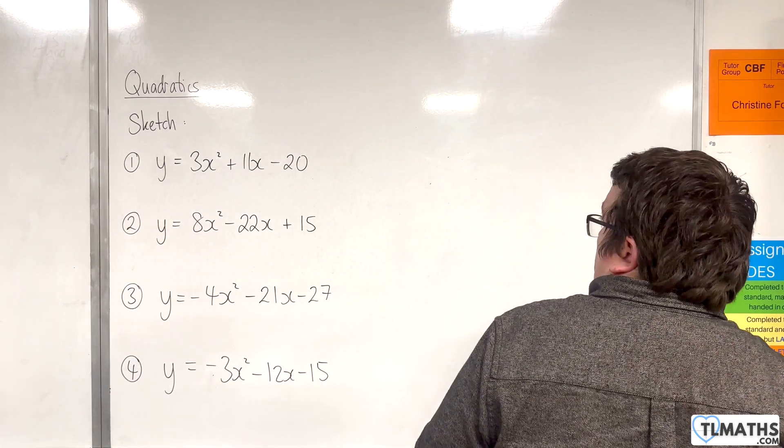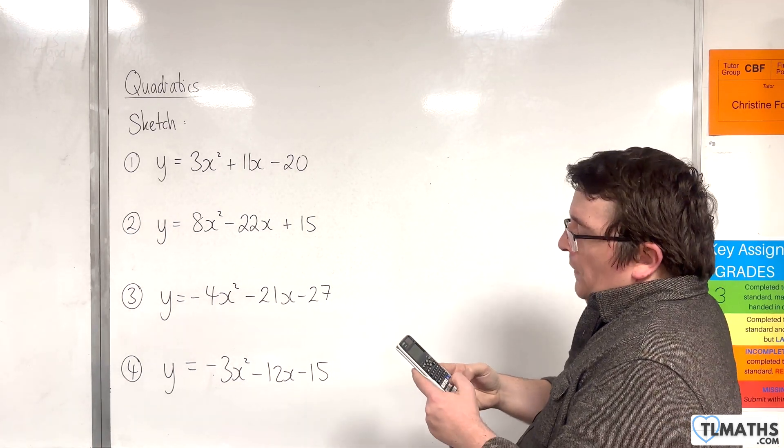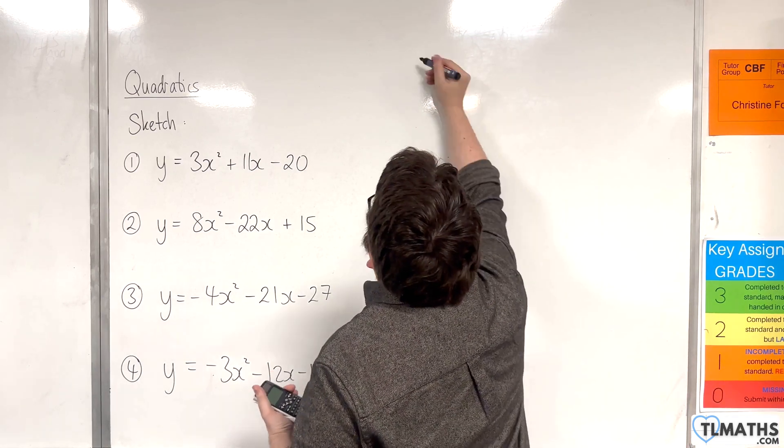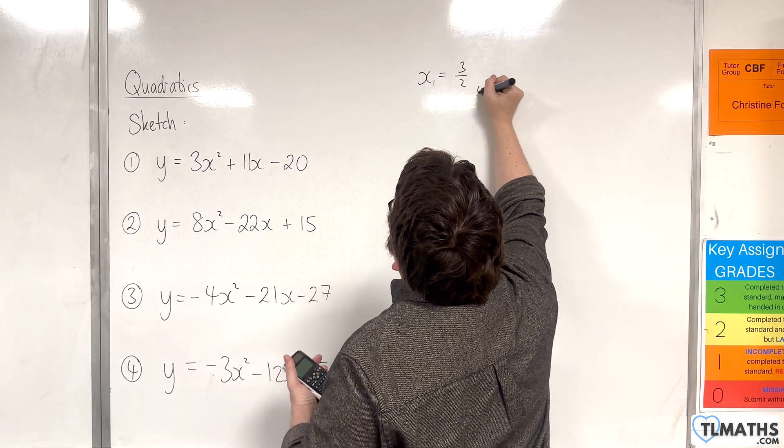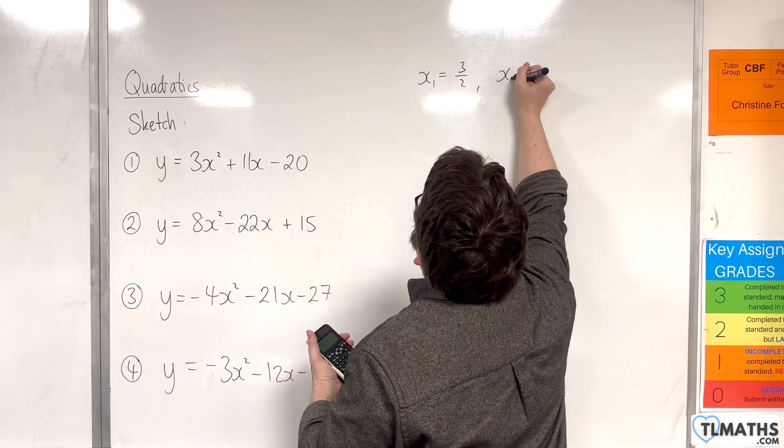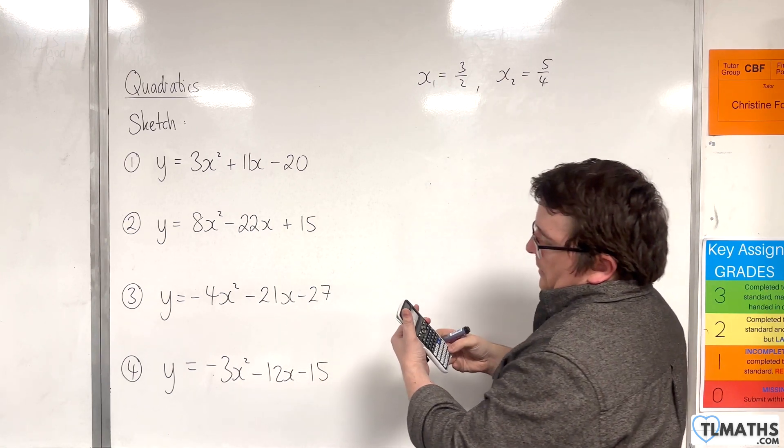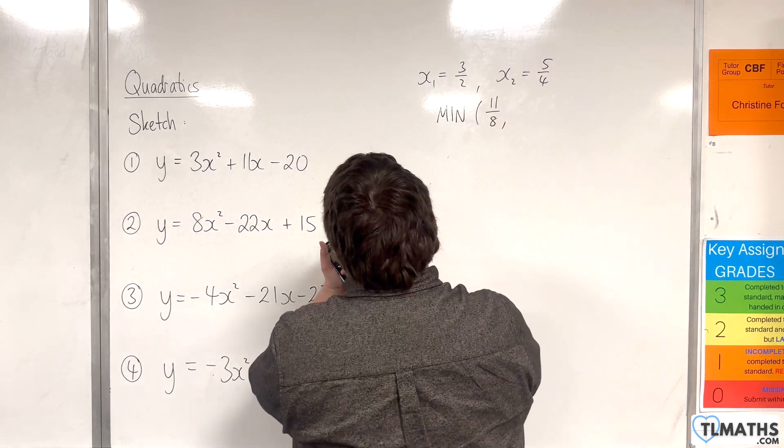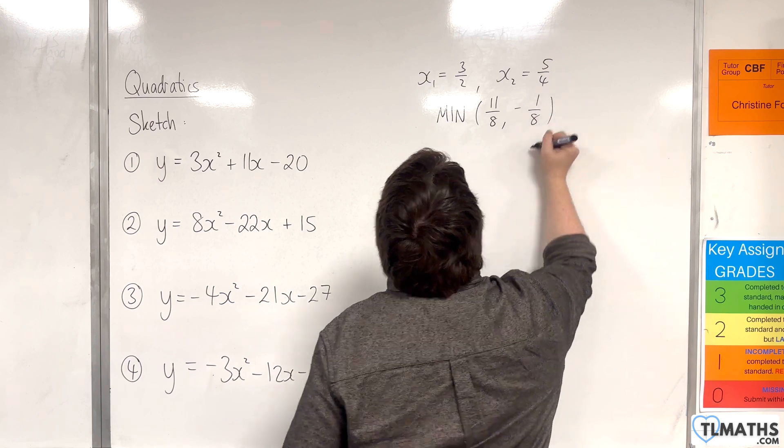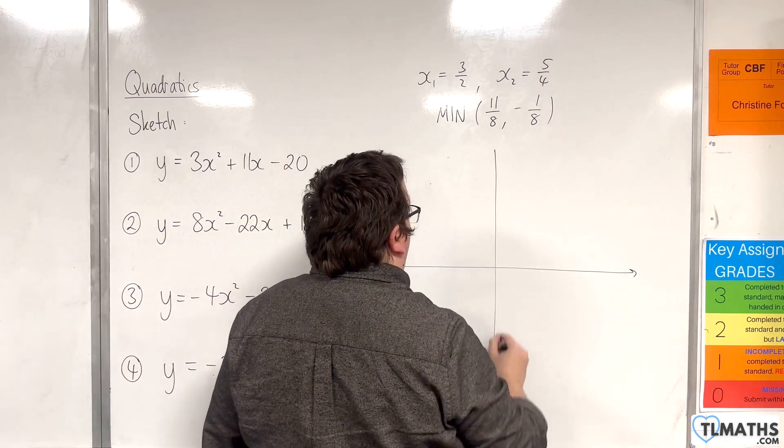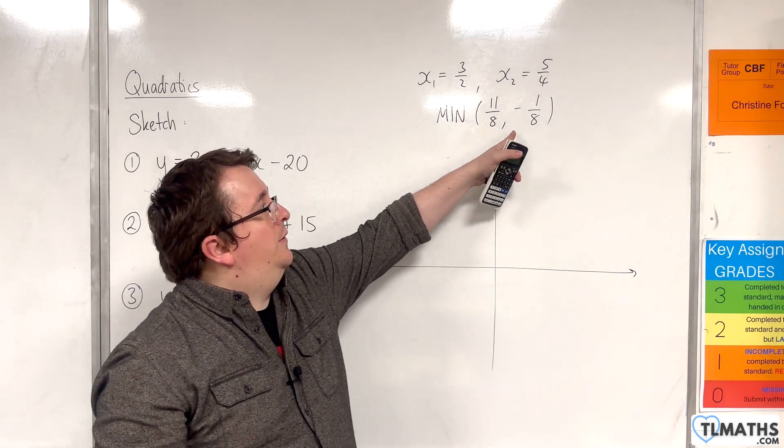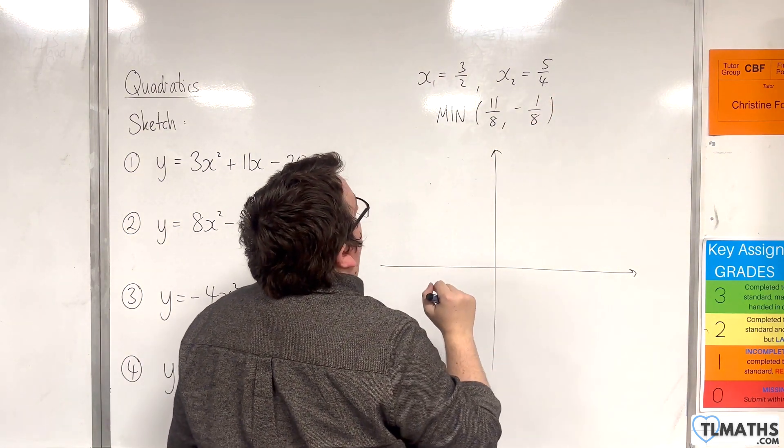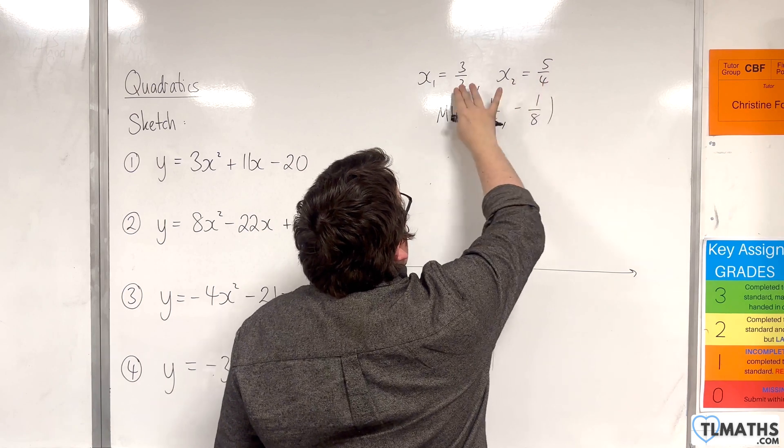Let's take a look at the second example. So let's plug those values in: 8, -22, and 15. We get x₁ is 3/2, x₂ is 5/4, and then I'm told minimum is 11/8 and -1/8. So our vertex is in this bottom right-hand quadrant, and we've got 3/2 and 5/4. So 5/4 comes first, then 3/2.